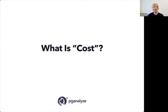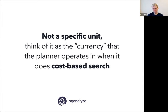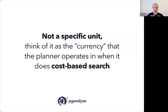What is cost really? Cost is not a specific unit — it's more like a currency that the planner operates in. What matters most is that the planner has certain logic that gives a certain cost number, and other logic that gives another cost number, and then the planner compares the two. It's not necessarily a number of bytes or CPU cycles — just a comparable internal measure.